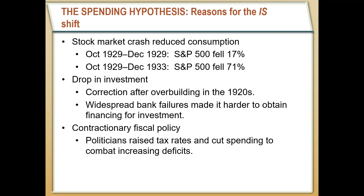It could have also been due to a drop in investment. We saw a lot of investment in the 1920s with really fast growth, and it's possible that people started to cut back on investment, simply correcting for over-investing in the 1920s. At the same time, we saw a lot of bank failures throughout the 1920s, which made it much more difficult to get investment — when people actually did want to invest, there were fewer banks from which they could borrow.